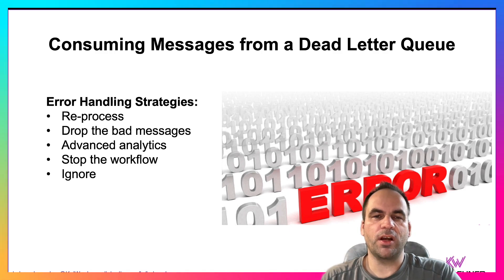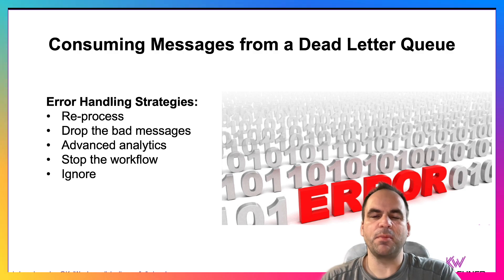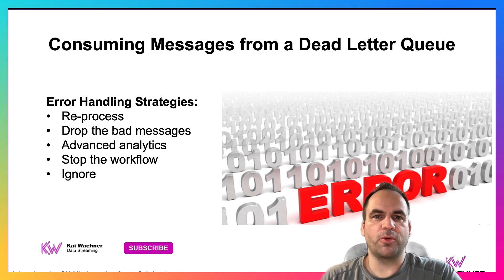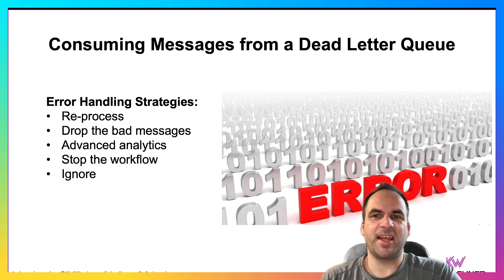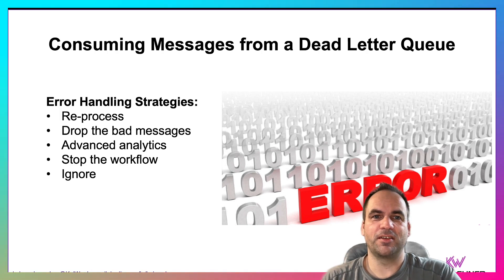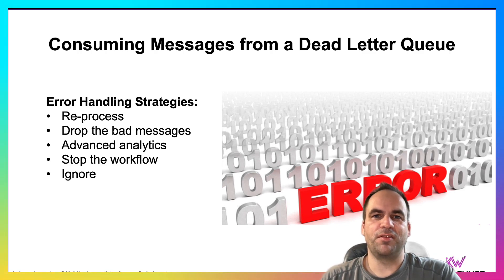No matter how you implement the strategy for validation with schemas and data contracts, the other important question is: what do you do with the messages in the dead letter queue for error handling? There are a few strategies. The most common one is to reprocess the data, but this doesn't make much sense if the message structure is wrong and you simply cannot handle it, because then you will fail every time.